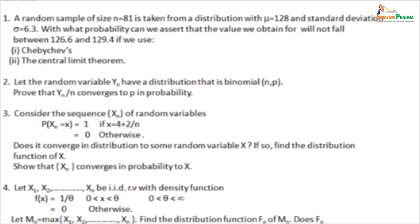Problem 1 is straightforward: a random sample of size n = 81 is taken from a distribution with μ = 128 and σ = 6.3. With what probability can we assert that the value of x̄ will not fall between 126.6 and 129.4? Use Chebyshev's inequality. Essentially, you want |x̄ − 128| > 1.4, or equivalently x̄ > 129.4 or x̄ < 126.6.